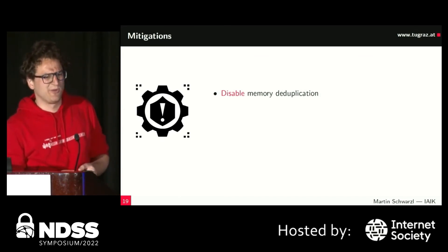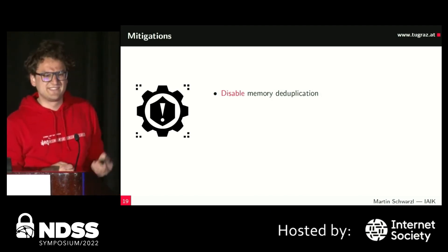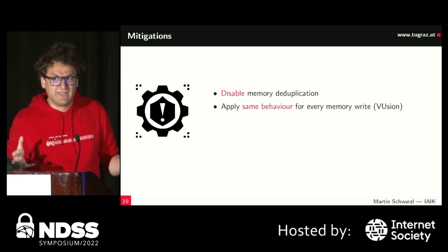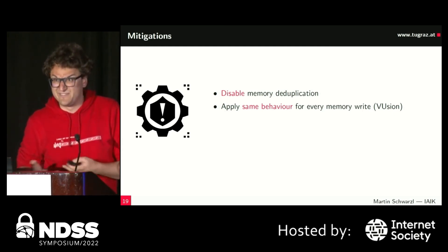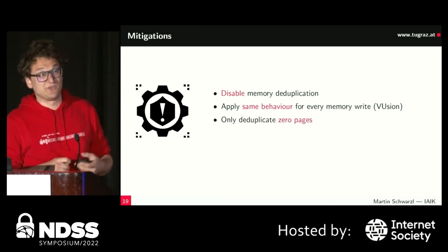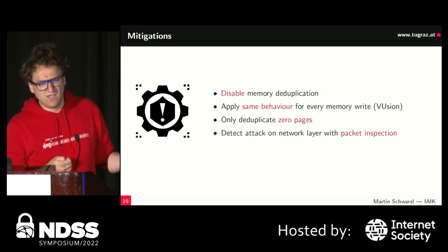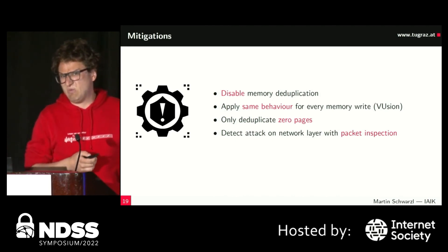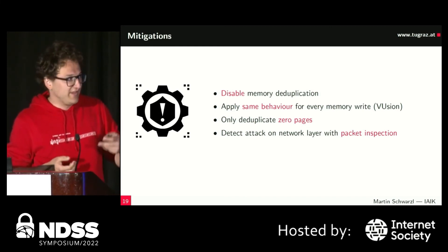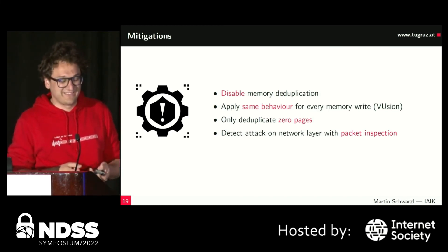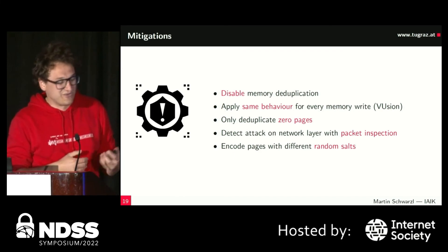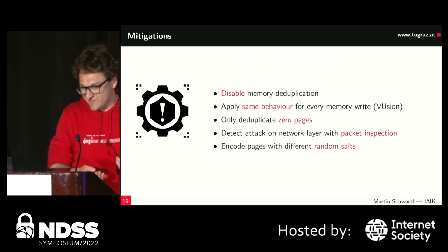How do we mitigate this? On Windows there is an opt-in that disables memory deduplication per process. Scientific work by ViewSec applies the same behavior to every memory write so you cannot distinguish copy-on-write pages from non-copy-on-write ones. They also proposed only deduplicating zero pages, though this carries significant performance overhead. Encoding pages with different salts was also proposed, but applying that at the process level could be costly.